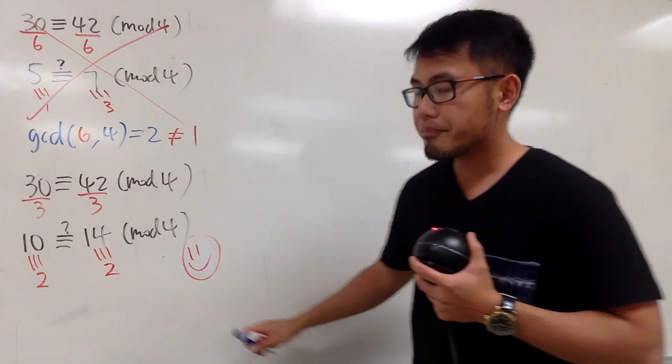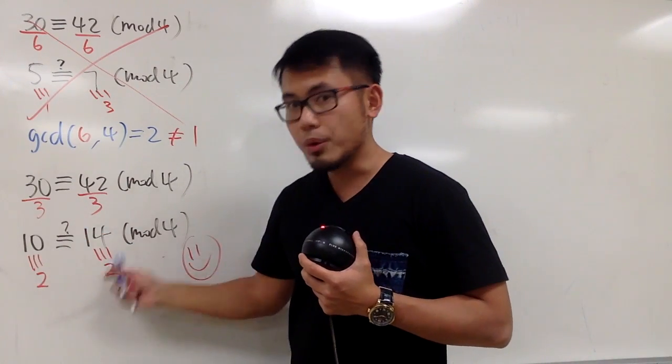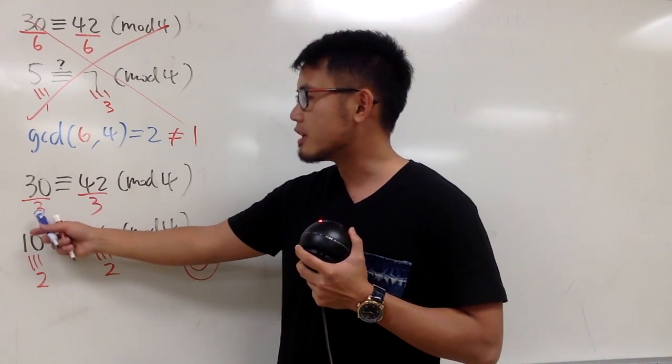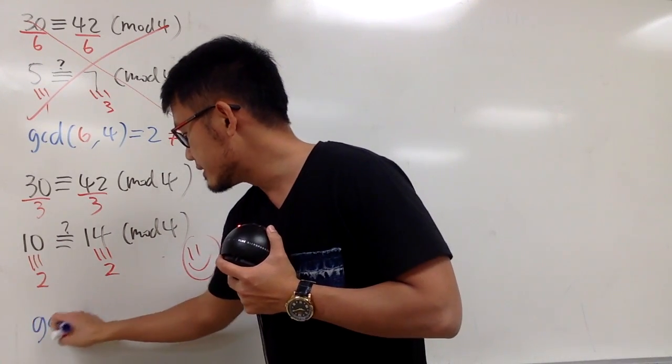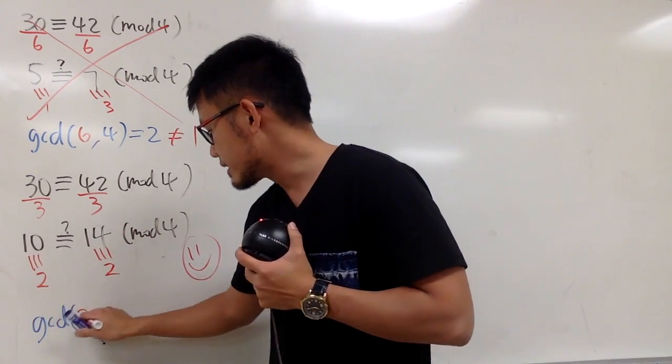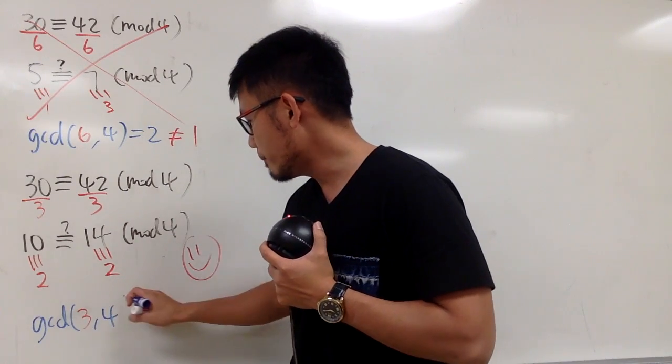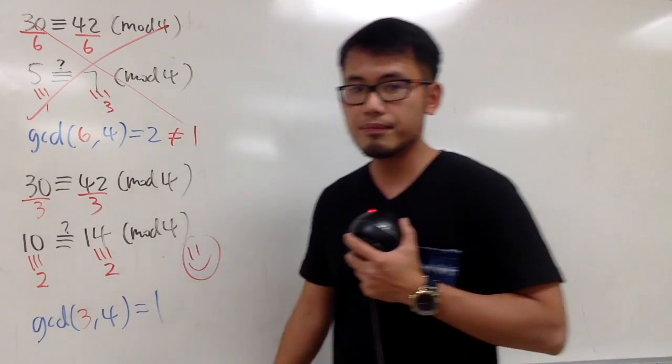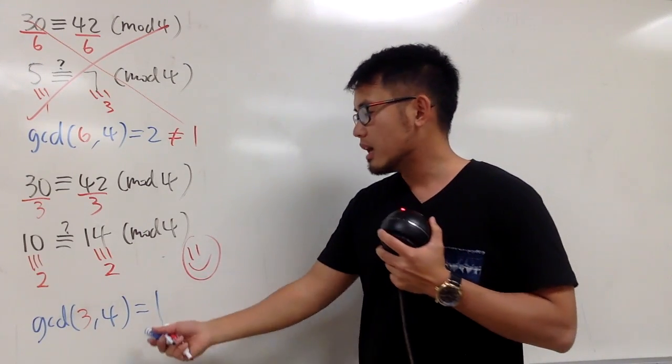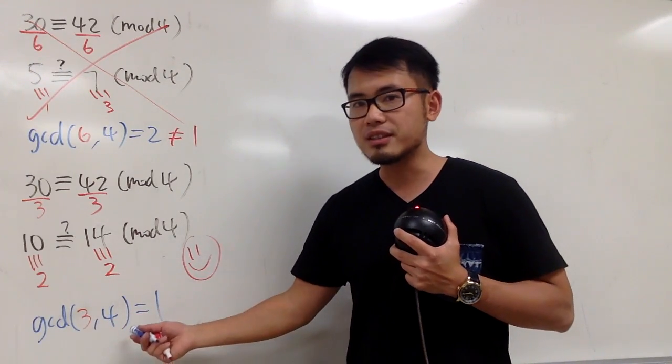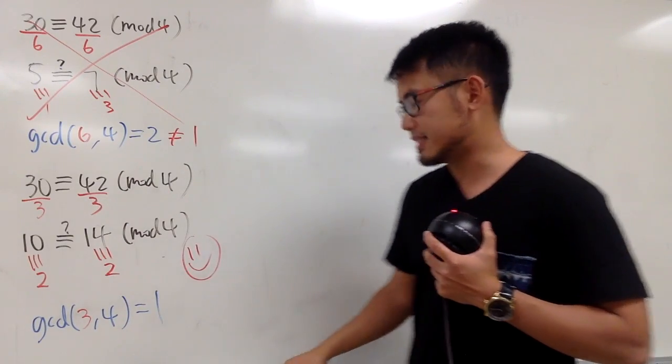Notice, this time, this is true because the greatest common divisor of 3 and 4 is 1. Let me just write this down. The greatest common divisor of 3 and 4 is 1. When this and that are relatively prime, meaning having 1 as their greatest common divisor, we can actually divide it on both sides.